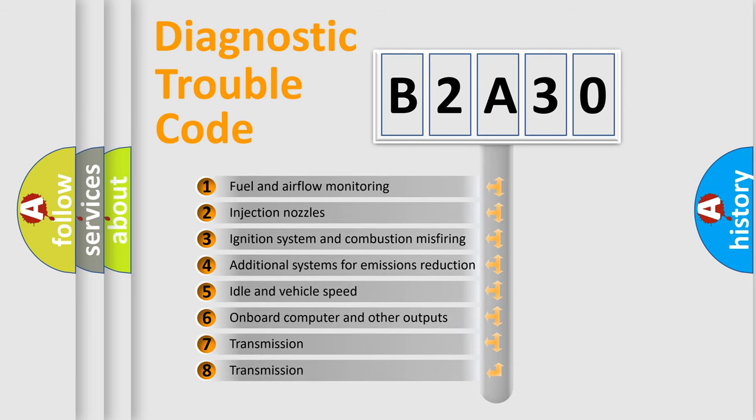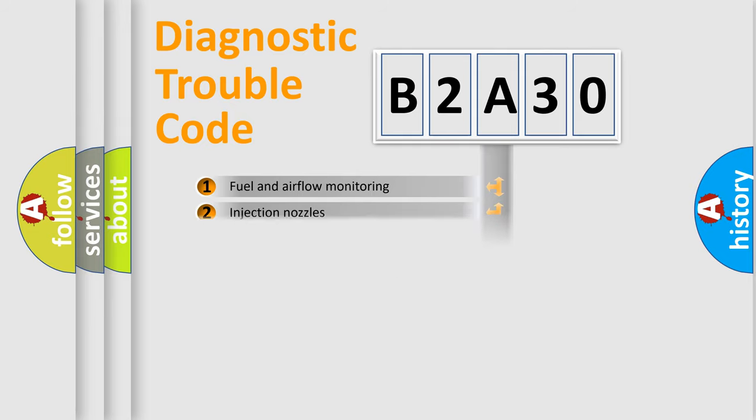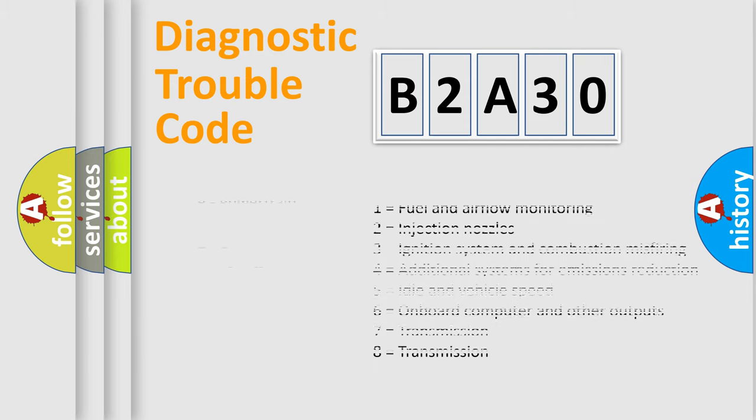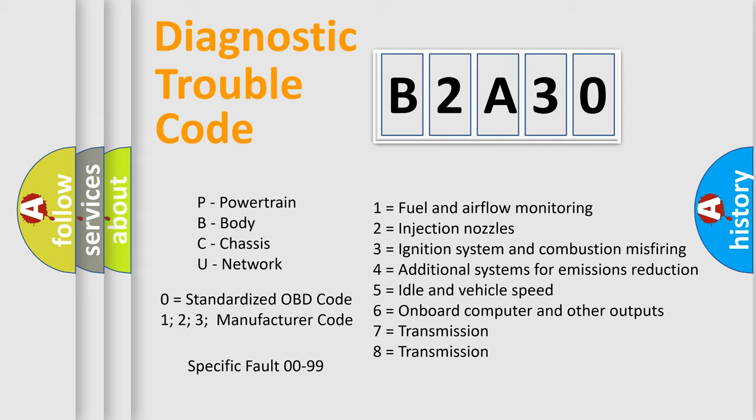The distribution shown is valid only for the standardized DTC code. Only the last two characters define the specific fault of the group. Let's not forget that such a division is valid only if the second character code is expressed by the number zero.